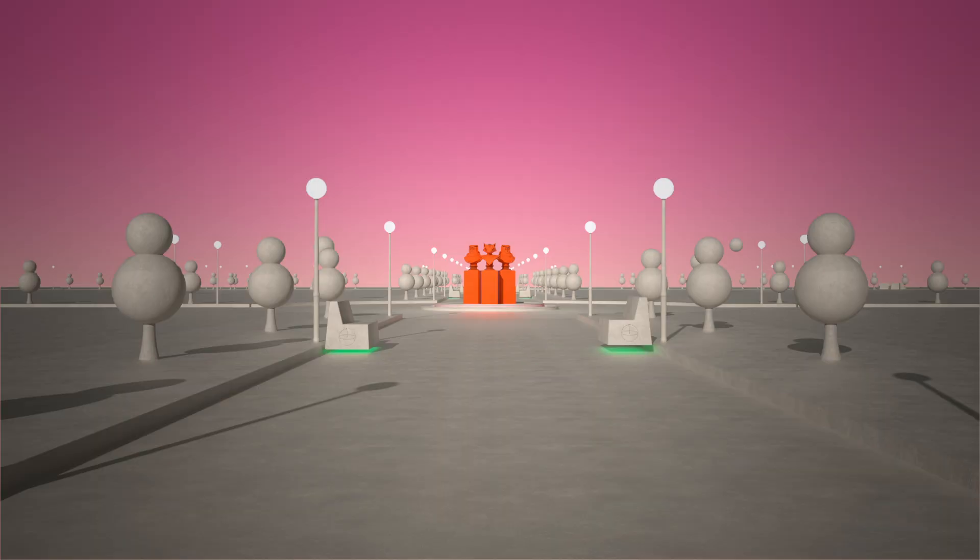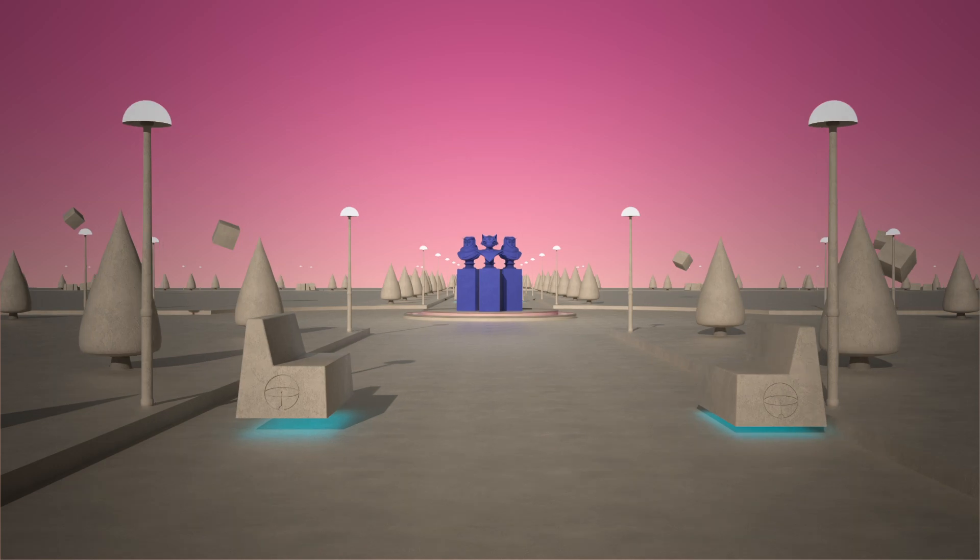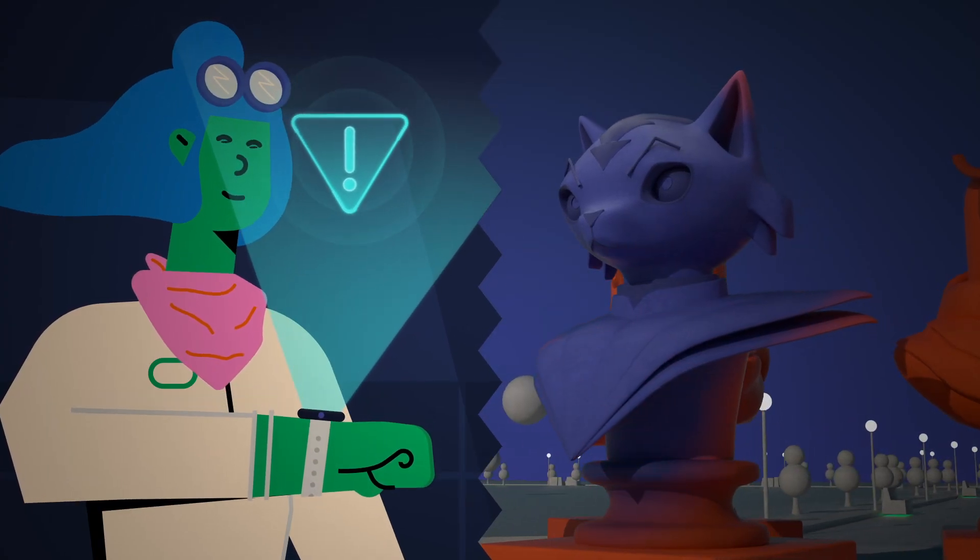Une première statue se trouve au parc Osis, alors que l'autre enjolive le parc Ida. Vous apprenez que les statues se font constamment vandalisées, alors vous décidez d'agir.